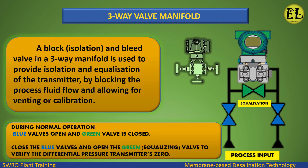A block, isolation, and bleed valve in a three-way manifold is used to provide isolation and equalization of the transmitter by blocking the process fluid flow and allowing for venting or calibration. During normal operation, the blue valves are open and the green valve is closed. Close the blue valves and open the green equalizing valve to verify the differential pressure transmitter's zero.